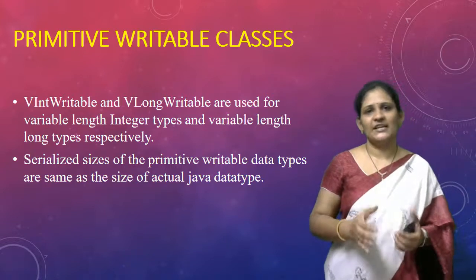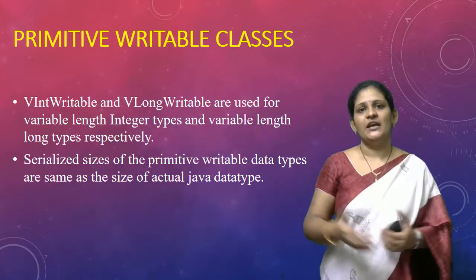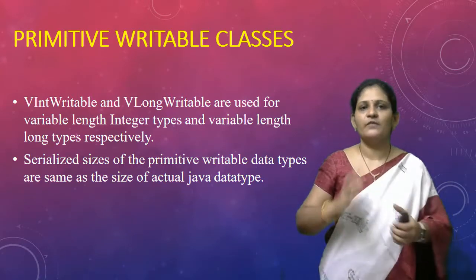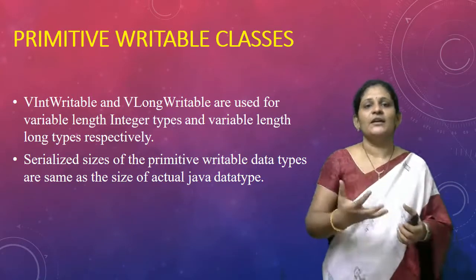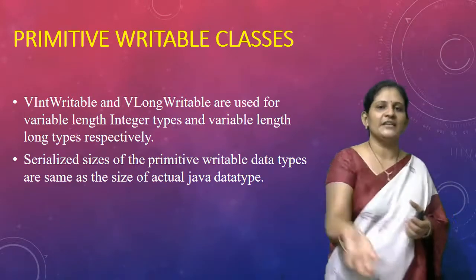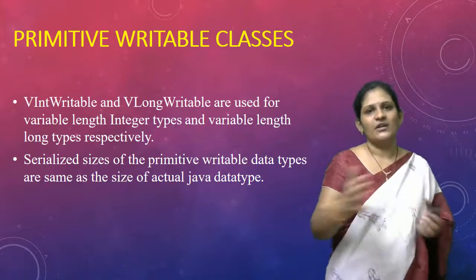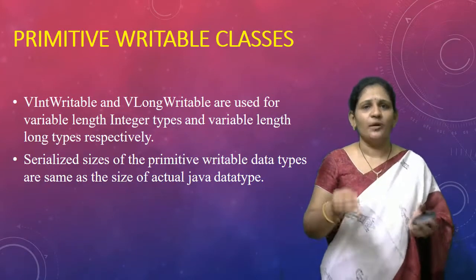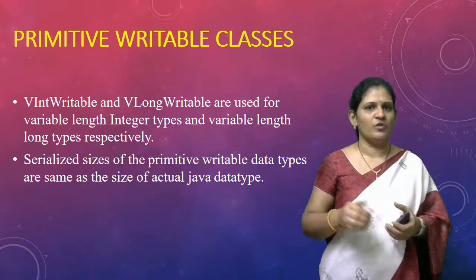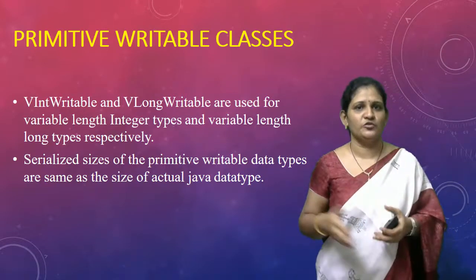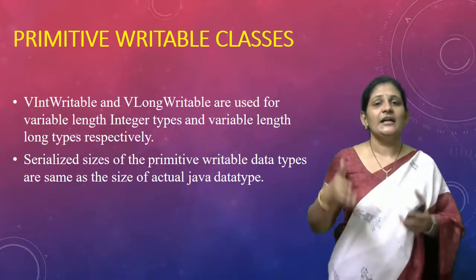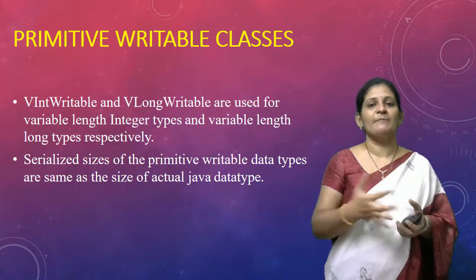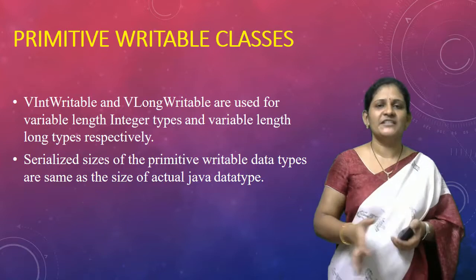You cannot send an object directly onto the network; you have to convert it into a byte stream and then send it — that is serialization. Serialization means converting object data into a byte stream. When you serialize these writable objects, the memory occupied by them is the same as Java primitive types. That is a very big advantage in Hadoop.